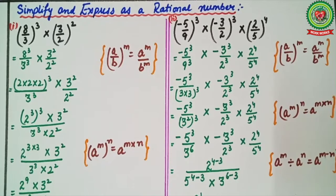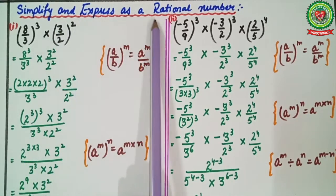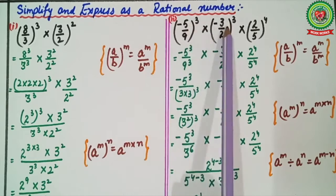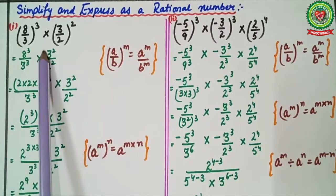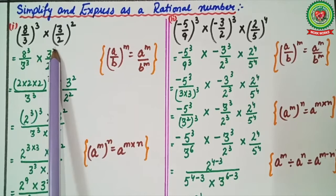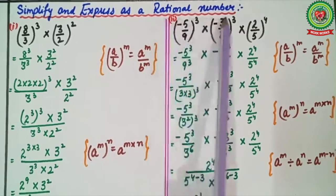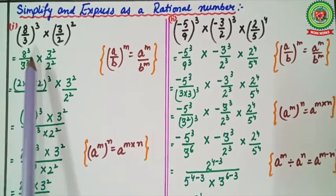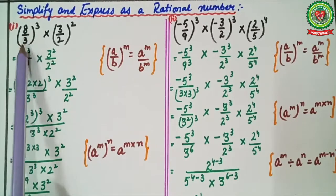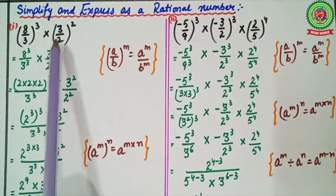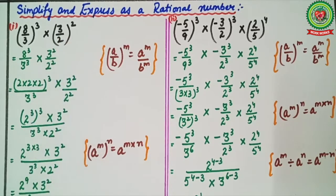Here we have the first example. The statement is: simplify and express as a rational number. We are given the expression 8 upon 3, raised to power 3, multiplied by 3 upon 2, raised to power 2.